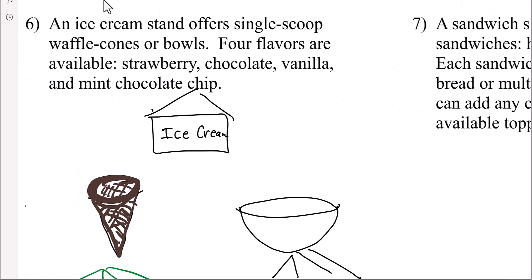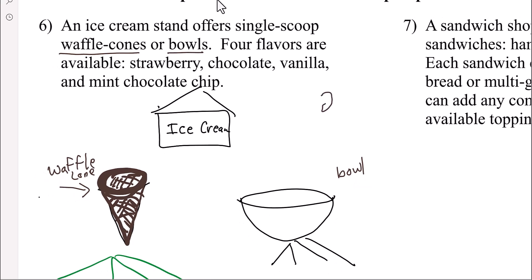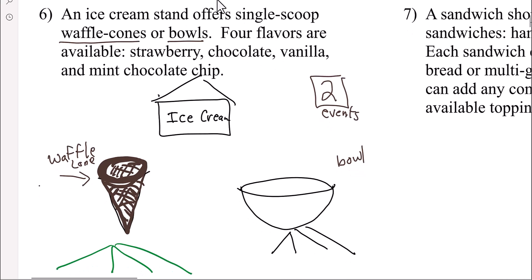An ice cream stand offers a single scoop waffle cone. So waffle cone. Not that I draw very well. Or a bowl. Again. Not that I draw very well. So look at that we have. We have two options. Right? Let's call those two events. So we have two events. A cone or a bowl.